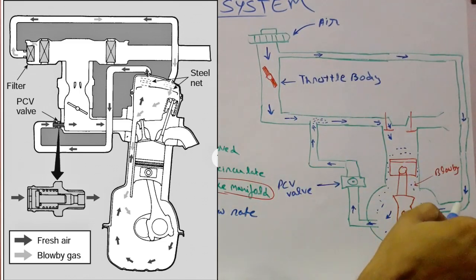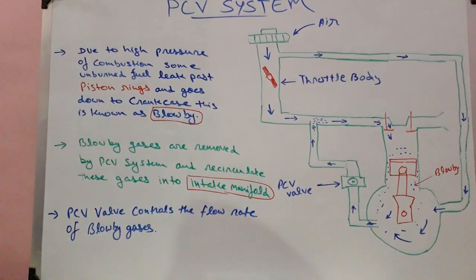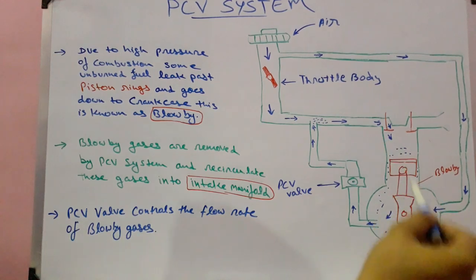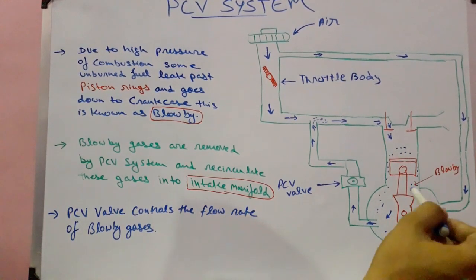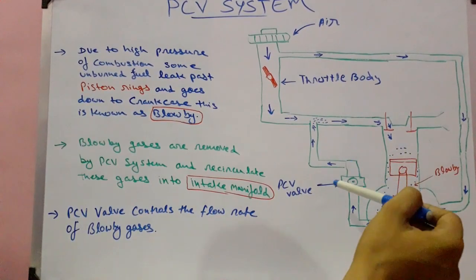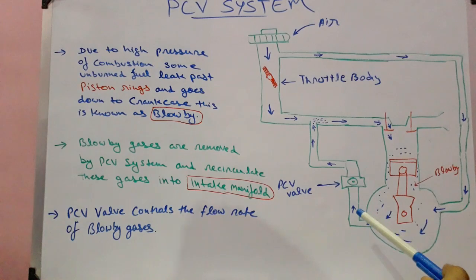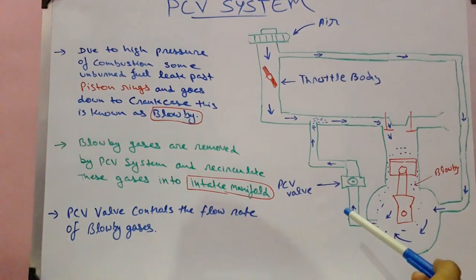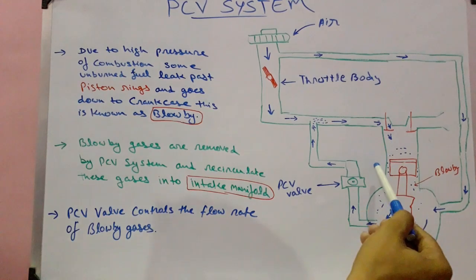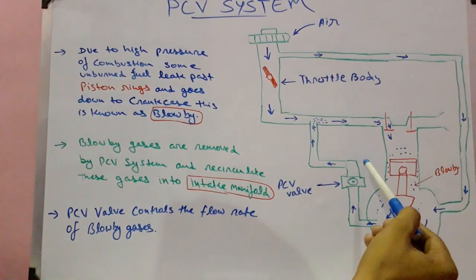When blow-by gases along with air come to the PCV valve, the vacuum created by the intake stroke opens a tapered valve which is inside the PCV valve. This opening makes the air and blow-by gases go into the intake manifold, and hence these gases are ignited for the power stroke.